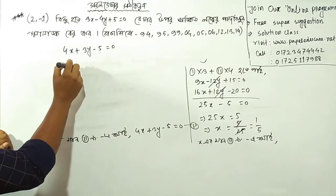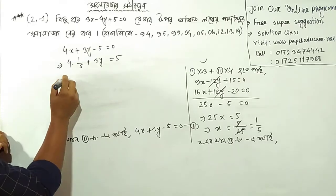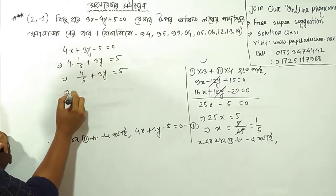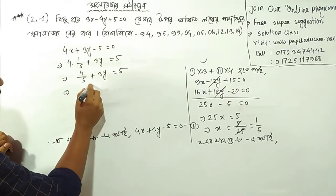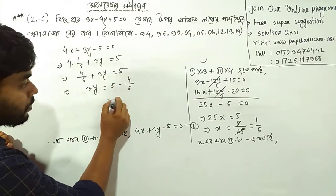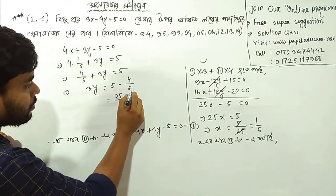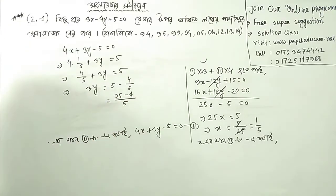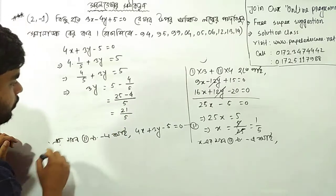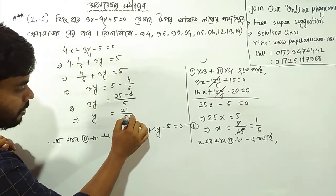4 into 1 by 5 plus 3y, a5 is equal to 5. 4 by 5 plus 3y is equal to 5. 3y is equal to 5 minus 4 by 5. 3y minus 5 plus 3y minus 5. 3y minus 5 is equal to 5.